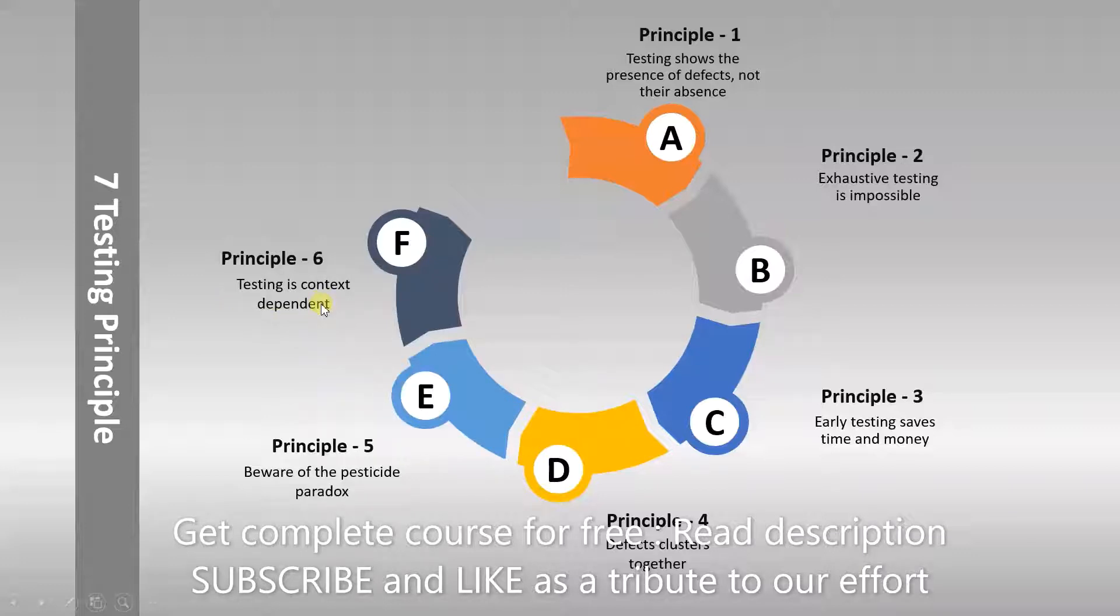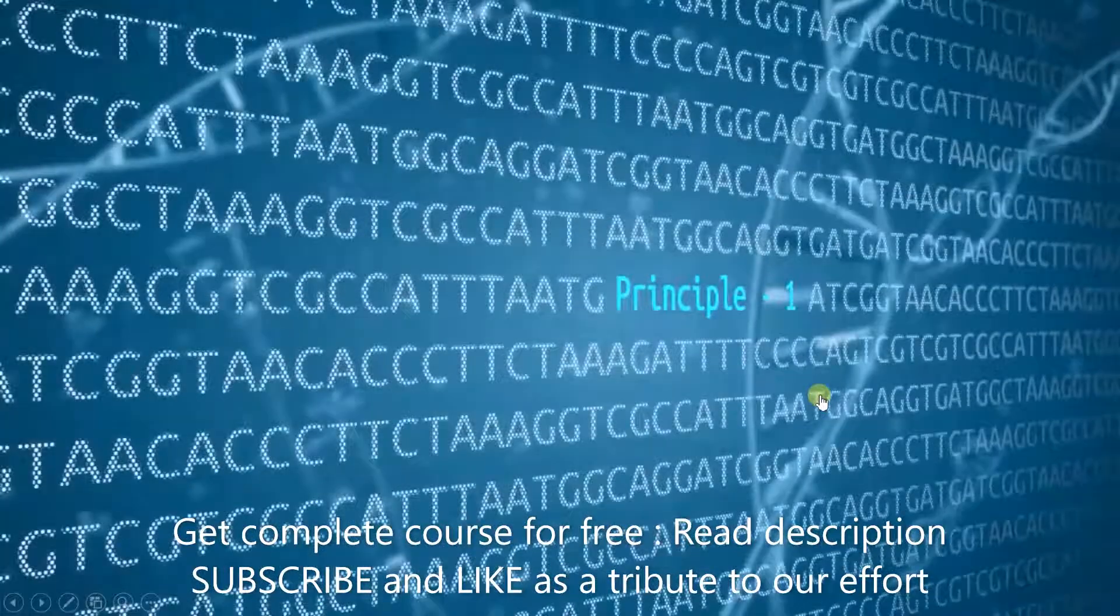The sixth principle is: testing is context dependent. And the seventh one is: absence of errors is a fallacy. These are the principles that will be our next focus. So what are we waiting for? Let's start with the first principle of testing.